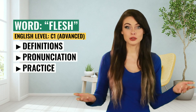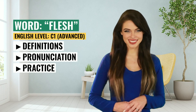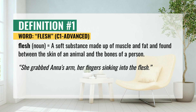Hi! Ready to get a little smarter? Do you know what this means? The first definition of flesh: a soft substance made up of muscle and fat, found between the skin of an animal and the bones of a person. For example, she grabbed Anna's arm, her fingers sinking into the flesh.